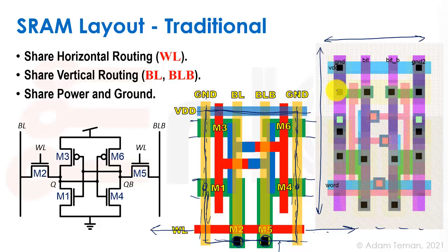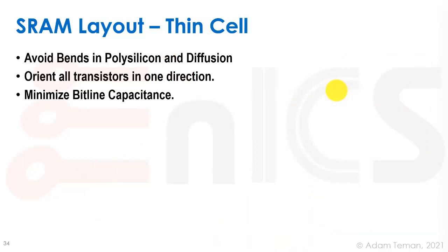A bunch of things happened when we started to go into more scaled technologies. One is that bends in polysilicon and diffusion become either very difficult to do, very restricted, or they're not allowed at all. So we need to avoid bends in the polysilicon and diffusion. Number two is that all the transistors have to usually be nowadays oriented in one direction. You can't have transistors that are both made like this and transistors made like this - they all have to be in one direction or the other, and that's a hard constraint.